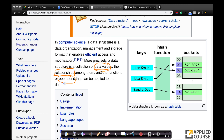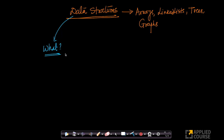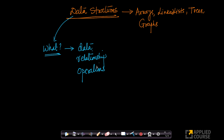Don't worry if you don't understand what this means — I will give you a very simple example through which you will be able to understand this clearly. A data structure in a nutshell is basically some data, some relationships between the various parts of the data, and some operations that you can perform on the data.